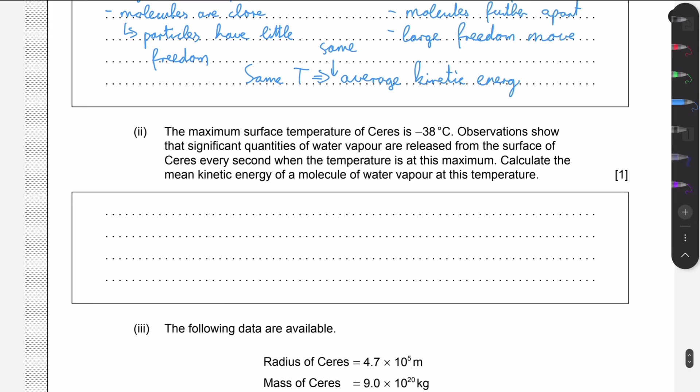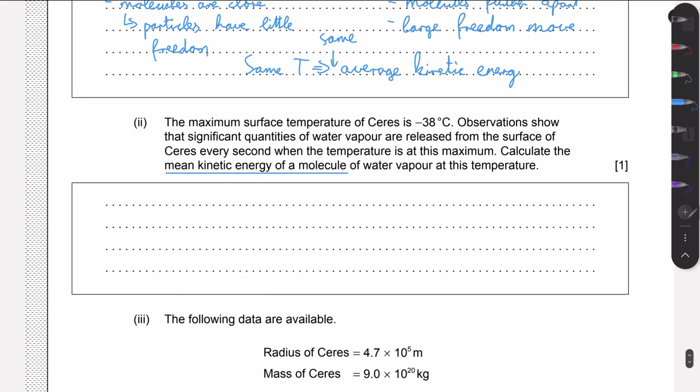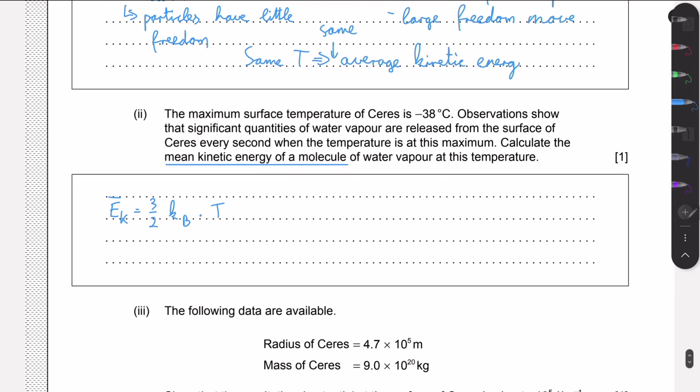We are given the maximum surface temperature, and we need to calculate the mean kinetic energy of the molecule at this temperature. Here we just need to apply a simple formula in the data booklet. Average kinetic energy is equal to 3 over 2 times Boltzmann constant times T. We know the temperature. The only thing we really need to watch out for is that this is in Celsius, so we need to convert it into Kelvin. The temperature in Kelvin, we do that by taking the Celsius and adding 273 to it. In this case, it will be minus 38 plus 273, which is 235 Kelvin.